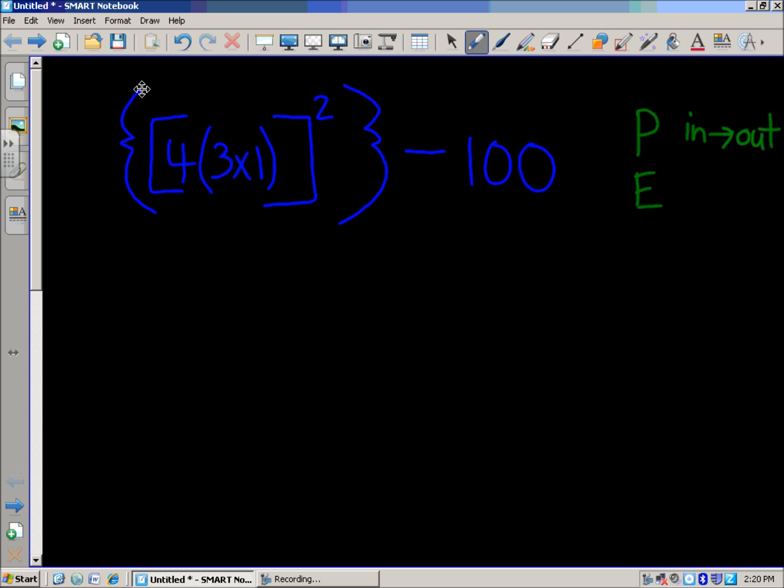Then we have exponents on the next level, followed by multiplication and or division. That's all done left to right. And at the last level, the very bottom level of operations, we have addition and subtraction, all done left to right.